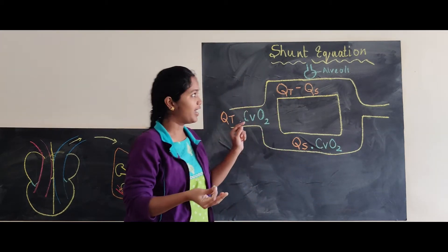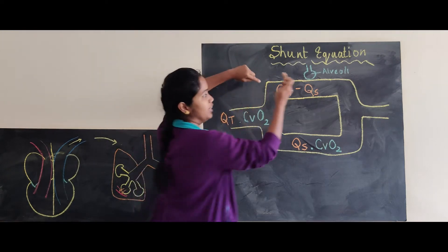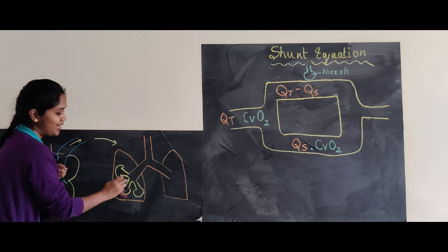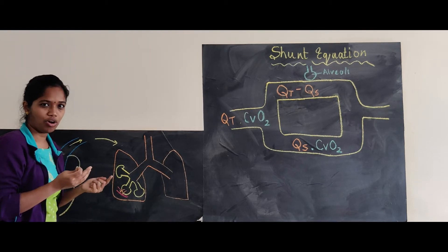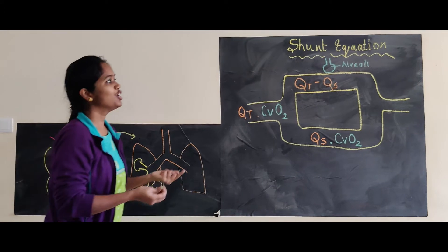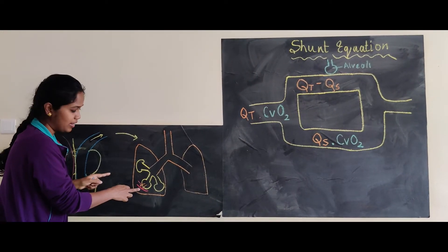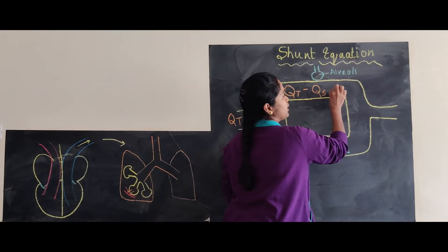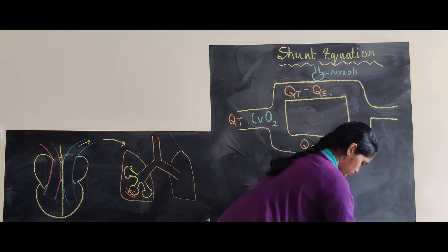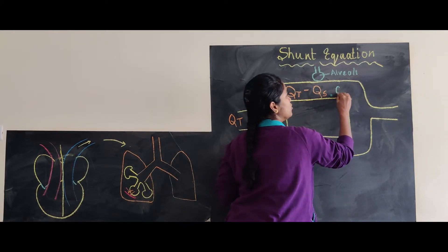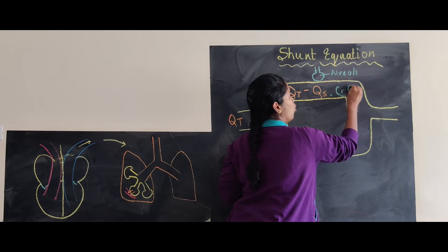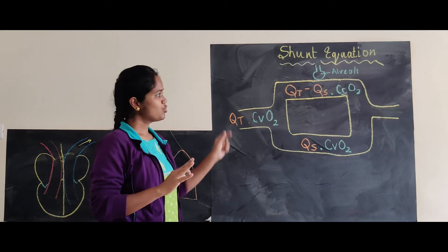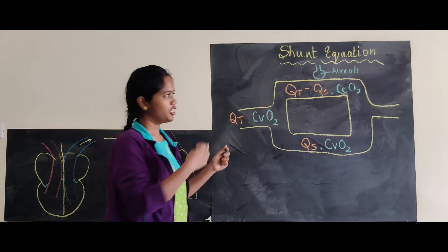On the other hand, the quantity of blood being oxygenated by the alveoli is oxygenated completely or almost completely by the help of capillaries. Therefore, we denote the oxygen content of this blood as CCO2 — that is, capillary oxygen content.